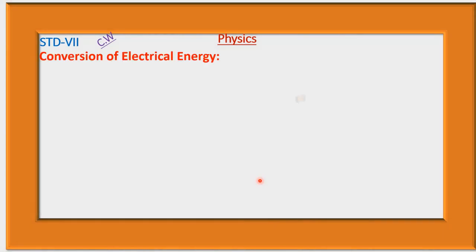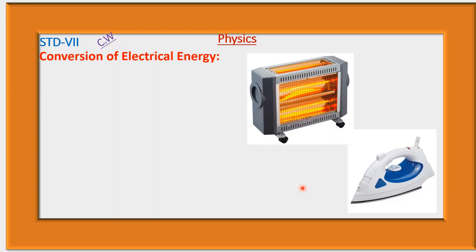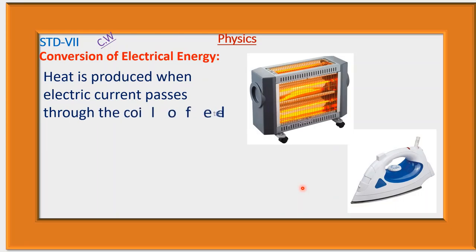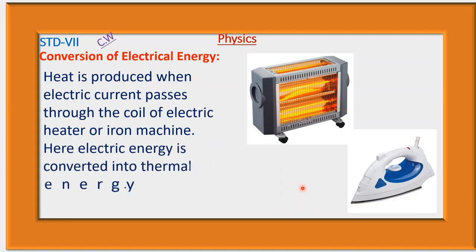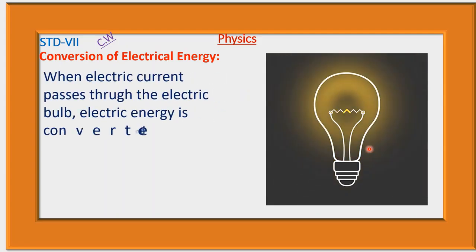Now the conversion of electrical energy. This is an electric heater — we get heat from it. This is an iron machine — we also get heat energy from it. Heat is produced when electric current passes through the coil of an electric heater or iron machine. Here, electrical energy is converted into thermal energy. When current passes through the filament of an electric bulb, we get light energy and thermal energy. Here, electric energy is converted into light and thermal energy.